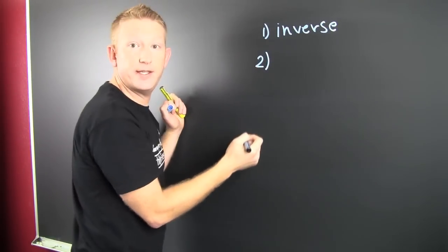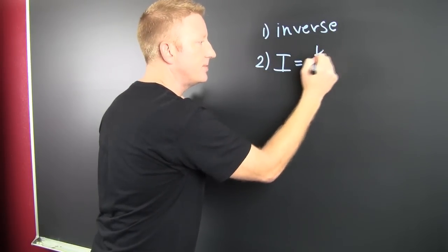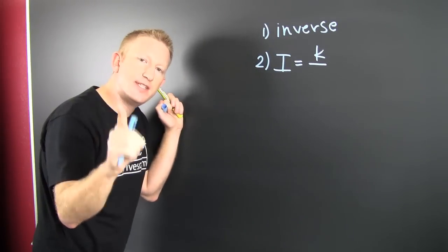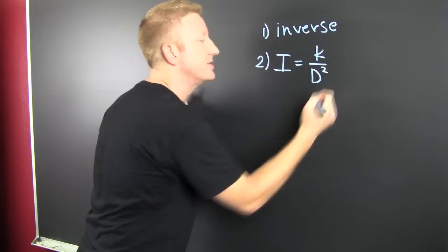They say I, the intensity, varies inversely as what? Now we're using the correct variables. The distance squared. So it's whatever that distance is, squared.